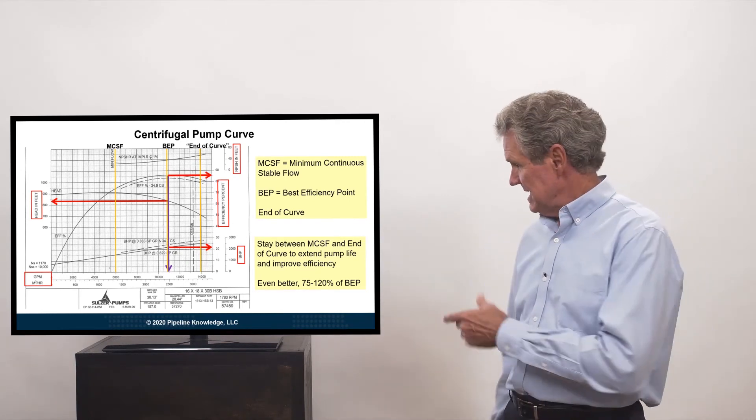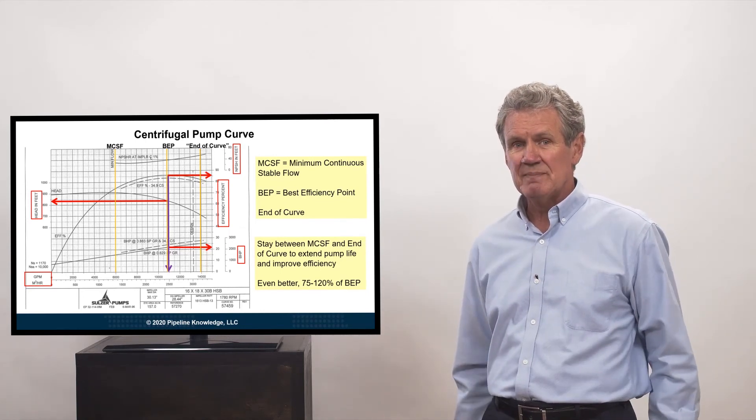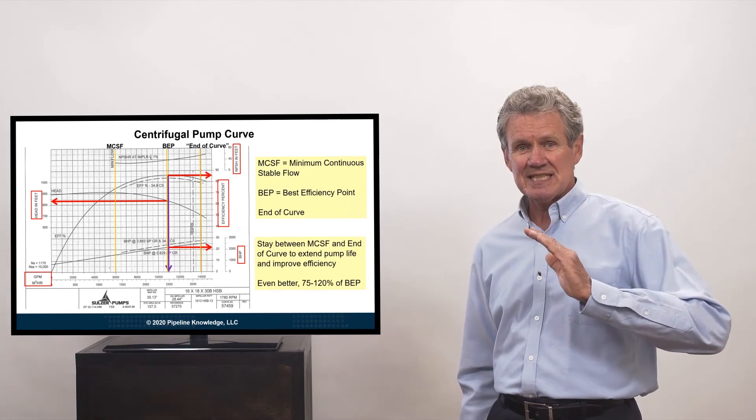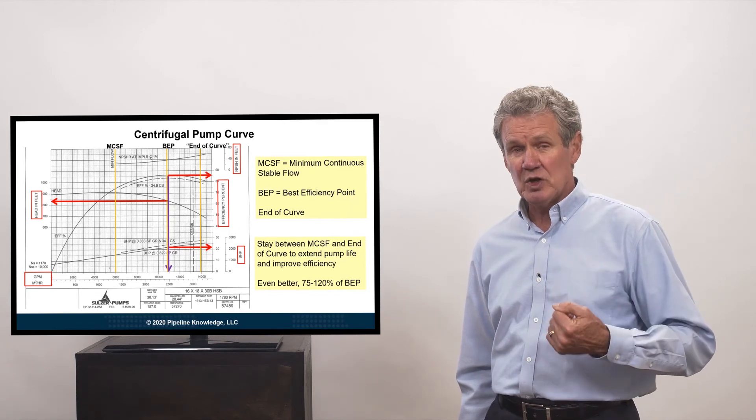Better yet, stay within 75% to 120% of that best efficiency point. Because if you get less and less efficient, you will not be as effective at converting.